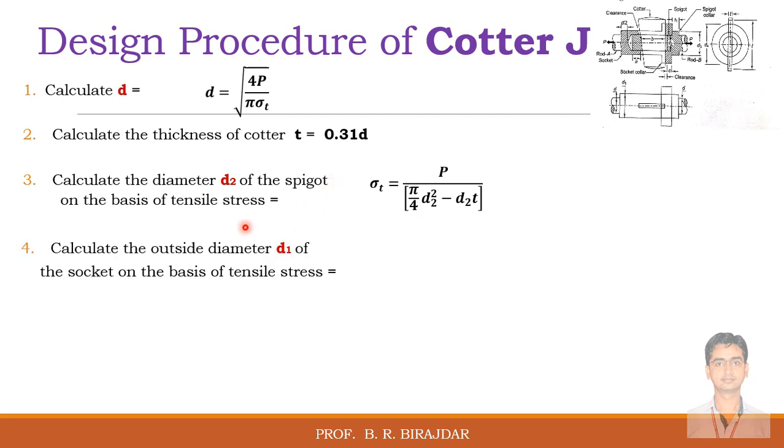Next, calculate the outside diameter d1 of the socket on the basis of tensile strength. So again, sigma t is equal to load upon the area, that area is the resisting area: pi by 4 d1 square minus d2 square minus d1 minus d2 into t.